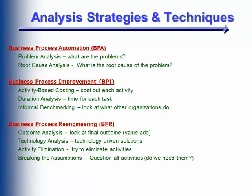There are a number of named approaches that fit under business process automation, business process improvement, or business process reengineering. For example, under business process automation you could look at problem analysis — looking through a given system of work and identifying what the problems are. You might identify something that needs to be sped up and automated. Another similar but different approach is root cause analysis: if there's a really serious issue in the company, what is the root cause of that problem?